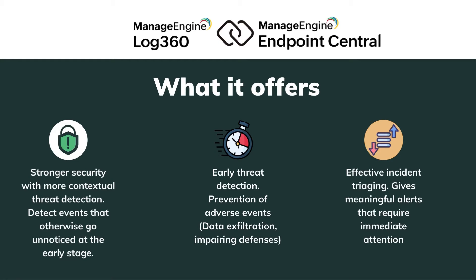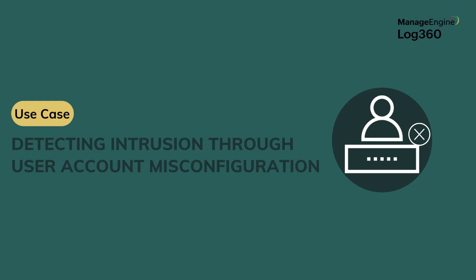Firstly, it analyzes not just individual events but correlates them with user behavior, device history, and threat intelligence feeds, allowing you to identify subtle anomalies that might otherwise slip through the cracks. Secondly, security analysts are bombarded with alerts every day — without proper prioritization, analysts waste time chasing down false positives, leaving real threats unattended. Lastly, the ultimate goal of TDIR is prevention: by catching threats early, you can stop them before they wreak havoc.